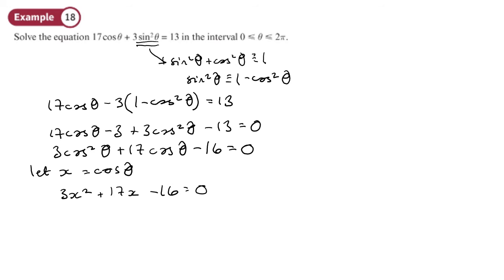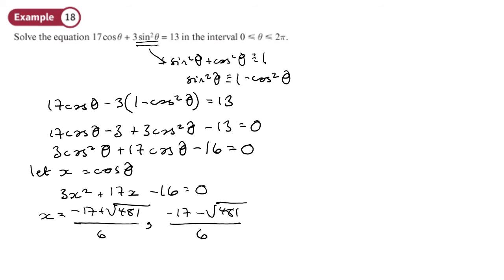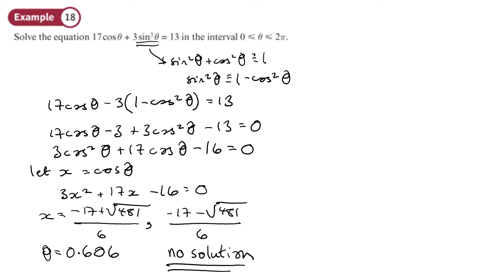The exact answers are x = (−17 + √481) / 6 and x = (−17 − √481) / 6. Taking the cos inverse of the first value gives θ = 0.606 to three significant figures. The second value doesn't give any solution because you'd be taking the cos inverse of a number smaller than −1 or bigger than 1, so there's no solution from that one.